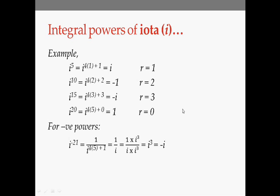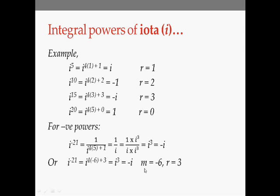Alternatively, write i^(−21) as i^(4×(−6) + 3). Since 4×(−6) + 3 = −21, the term i^(4×(−6)) equals 1, and you are left with i³ which is minus i. So here m equals minus 6 and r equals 3.